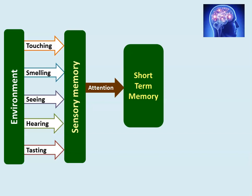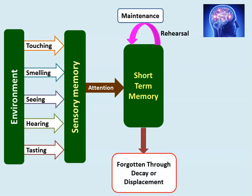We can correlate our memory system with a computer. Short-term memory can be compared to the RAM of a computer — it processes and remembers information for a shorter time. In short-term memory, when you continuously rehearse and maintain information, you can remember it. When you are not rehearsing or maintaining the information, it is lost — forgotten through decay or displacement. This is the short-term memory.